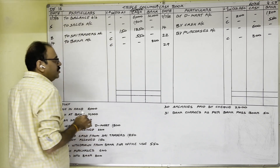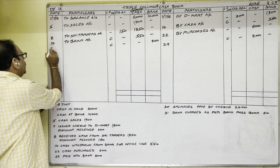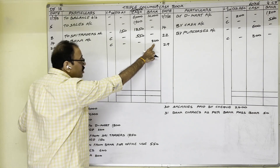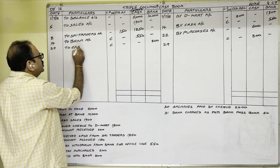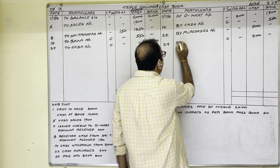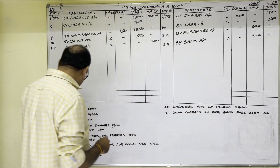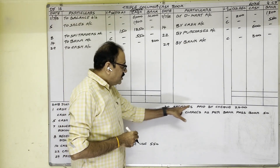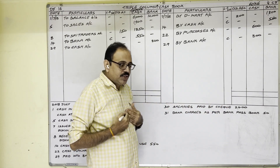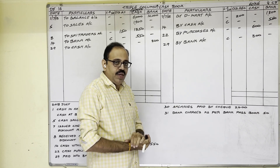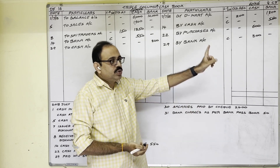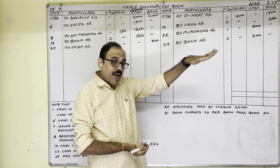In the bank column particulars for the 29th, write 'To Cash Account'. 30th date: salary paid by cheque, 2,400 rupees. Our firm has to pay salary to our employee; instead of giving cash we issue a cheque. The employee goes to the bank and takes money, so bank balance is decreasing — credit side bank column.